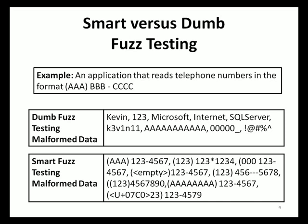With smart fuzz testing, malformed data is created while preserving the expected data format. Changes to specific values are made to create malformed data. For instance, numerals could be replaced with letters, or even different character sets such as Unicode characters. The malformed data created through smart fuzz testing preserves the expected data format, where only the data itself is modified.